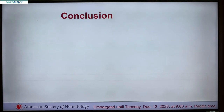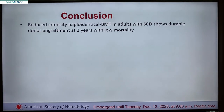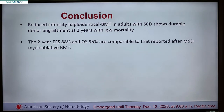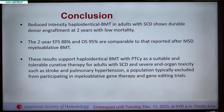In conclusion, reduced intensity haploidentical bone marrow transplant in adults with sickle cell disease shows durable donor engraftment at two years with low mortality. Our two-year event-free survival was 88 percent with overall survival of 95 percent, comparable to that reported after matched sibling donors in children with myeloablative bone marrow transplant. This supports haploidentical BMT with post-transplant cyclophosphamide as a suitable and tolerable curative therapy for adults with sickle cell disease and severe end-organ toxicity — such as stroke and pulmonary hypertension — a population typically excluded from myeloablative gene therapy.